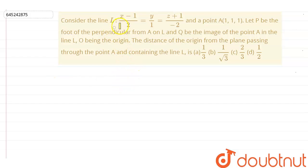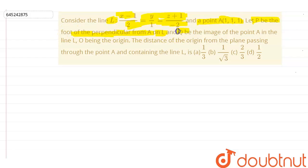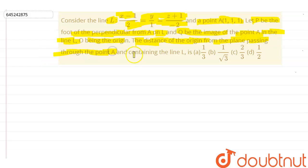Hello everyone. Here we have a question: Consider the line L, (x−1)/2 = y/1 = (z+1)/(−2), and a point A(1,1,1). Let P be the foot of the perpendicular from A on L, and Q be the image of the point A in the line L, O being the origin. We have to find the distance of the origin from the plane passing through the point A and containing the line L.